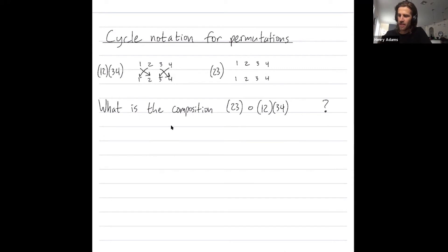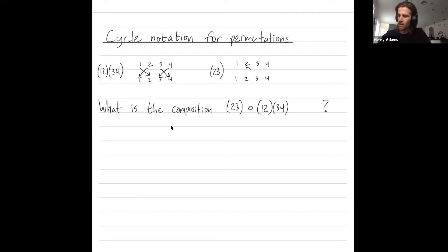This permutation has a particular name which I've drawn right here: (1 2)(3 4), whereas the permutation (2 3) corresponds to this permutation.